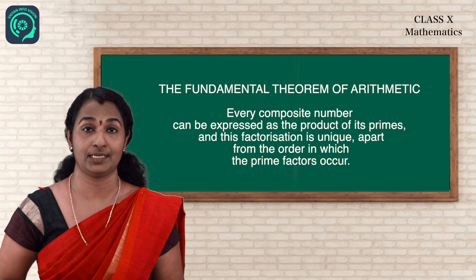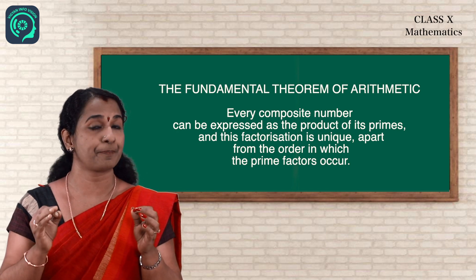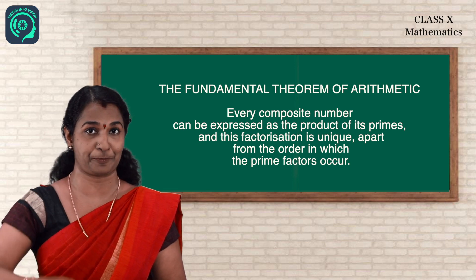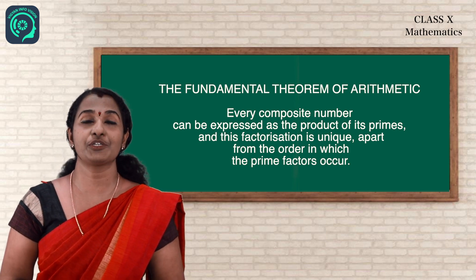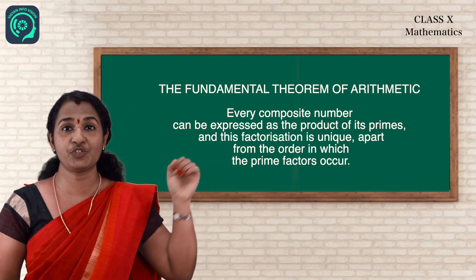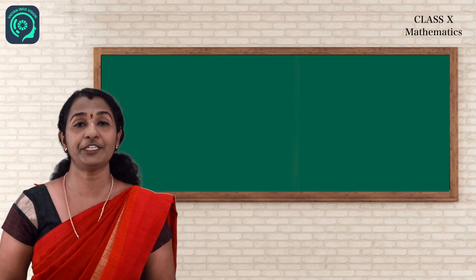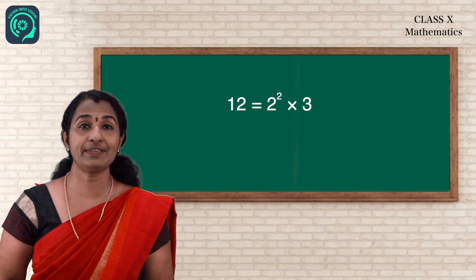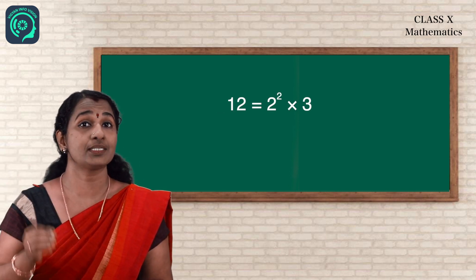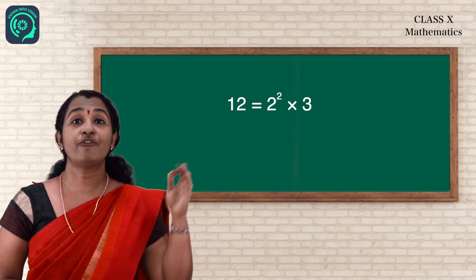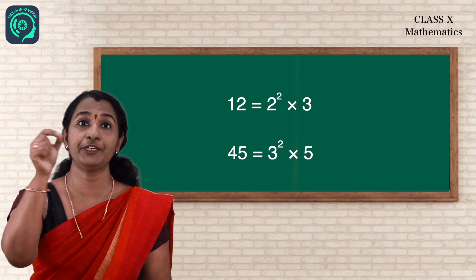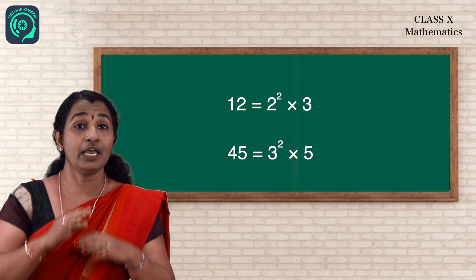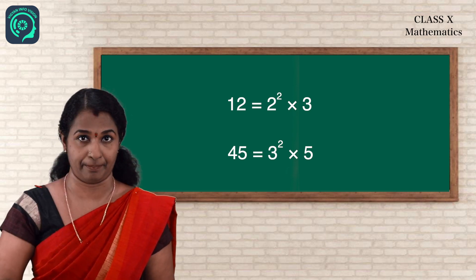Let us club all three parts together. The theorem states that every composite number can be expressed as the product of its primes, and this prime factorization is unique — this is the only way to express it, apart from the order in which the prime factors occur. For example: 6 = 2 × 3; 12 = 2² × 3; 45 = 3² × 5.